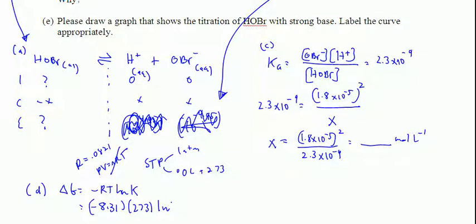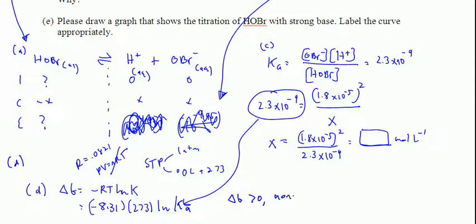I'm going to plug 273 back in there, take the natural log, and use my K value. Oh wait, actually they gave me K already. Silly me. There's K right there. That's going to be the answer to D when you work it out. Delta G here should be greater than zero, which makes it non-spontaneous.